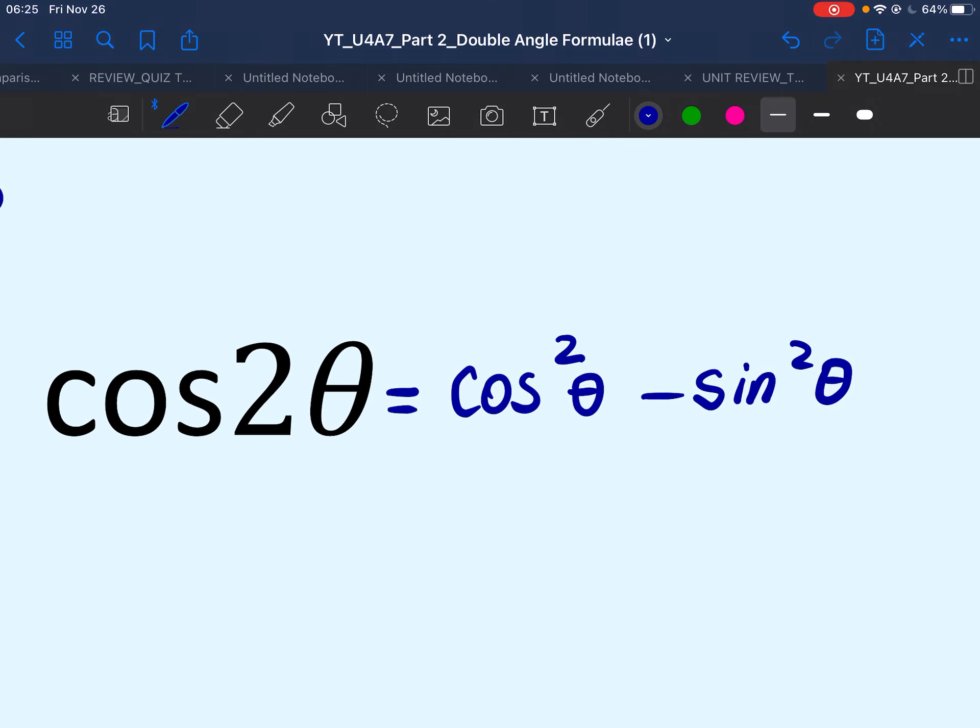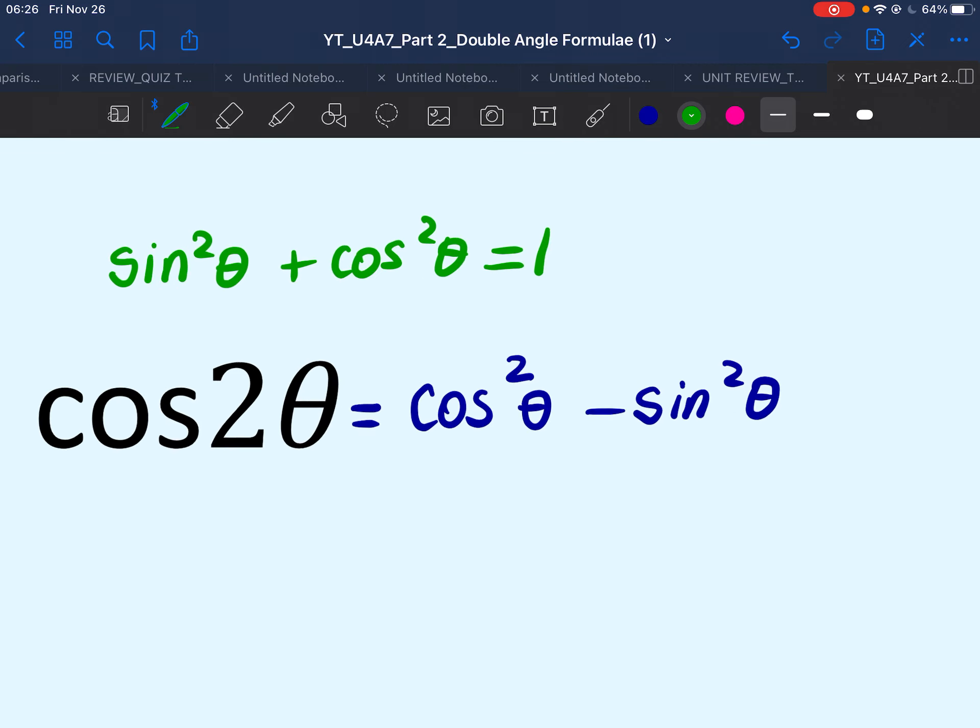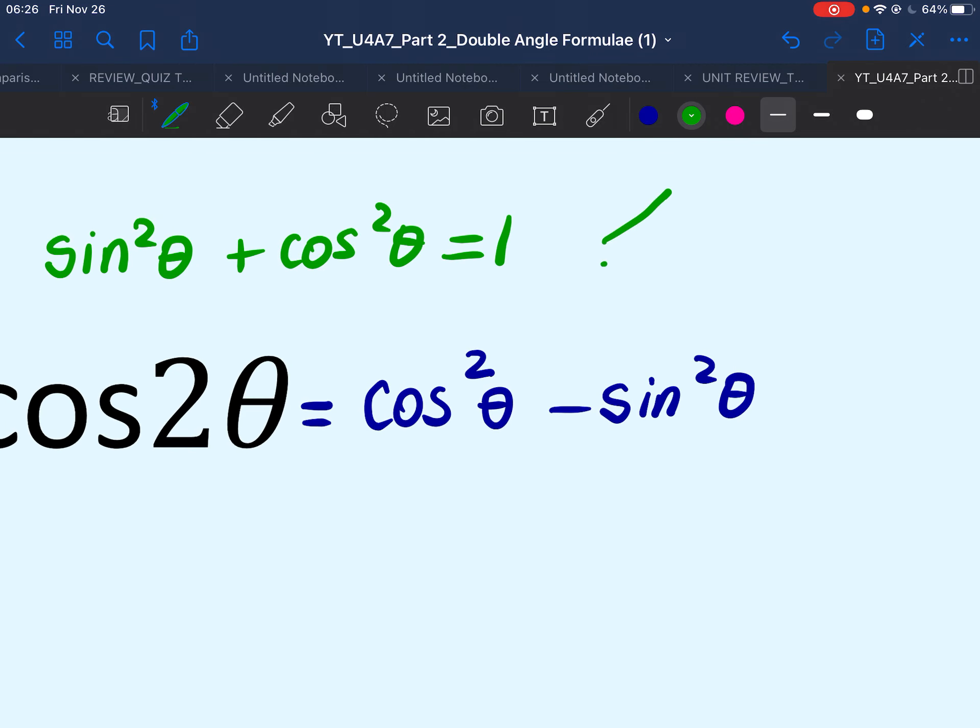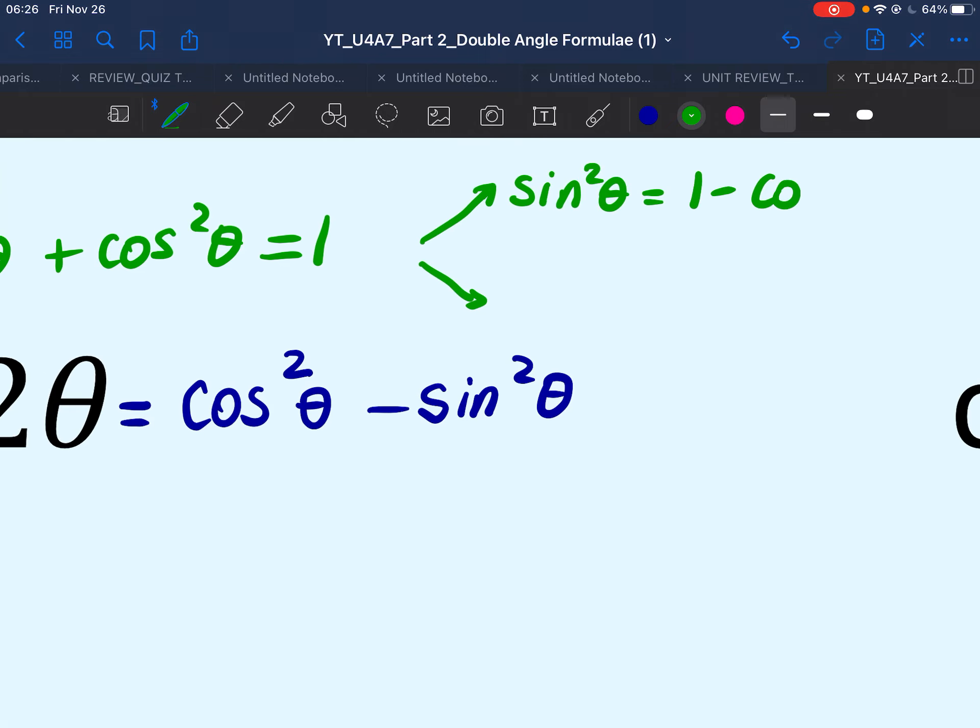If you remember, one of the first trig formulas that we have learned is the Pythagorean identity. It states that sine square theta plus cos square theta equals 1. So as a result, we're going to express sine square theta as 1 minus cos square theta.